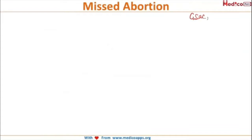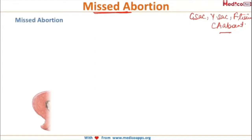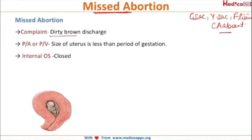In the missed abortion group, as we have already discussed, the gestational sac is present, yolk sac is present, and fetal tissue is present, but cardiac activity is absent. Its name is missed abortion, but the actual process of abortion has not started. The patient complains of dirty brown discharge and the size of the uterus is less than the period of gestation.